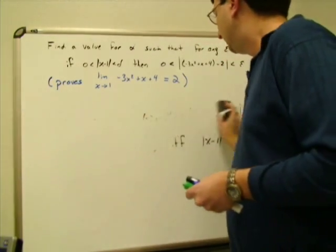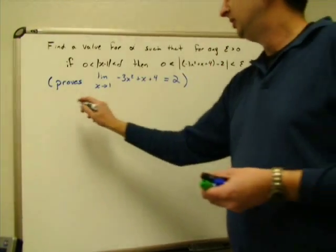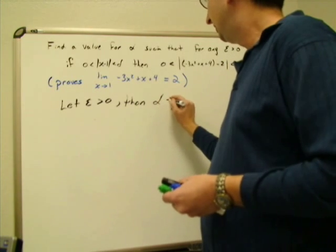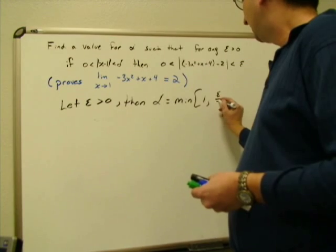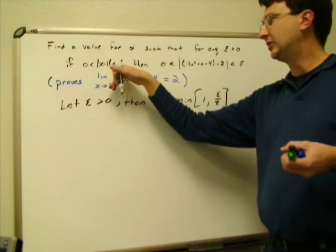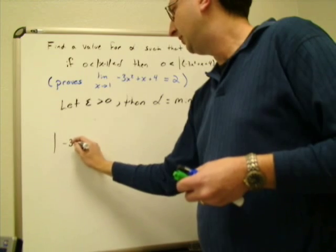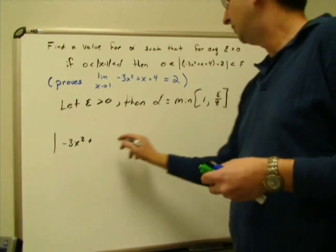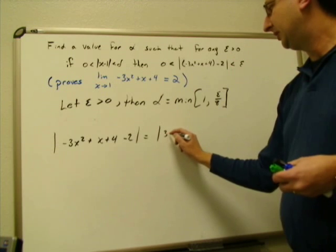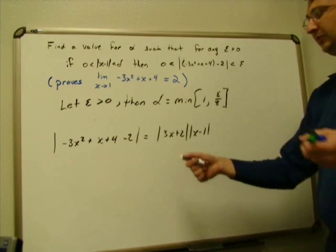Now that we've done the background work, we can write the formal proof. Let epsilon be greater than zero. Then we choose delta to be the minimum of one and epsilon over eight. Starting from the assumption that the absolute value of x minus one is less than delta, we want to show the absolute value of negative three x squared plus x plus four minus two is less than epsilon. We've already shown this equals the absolute value of three x plus two times the absolute value of x minus one.